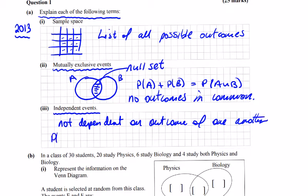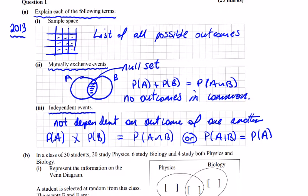That's where the probability of A times the probability of B equals the probability of A intersection B, or the probability of A given B equals the probability of A.